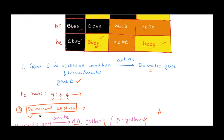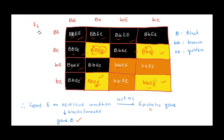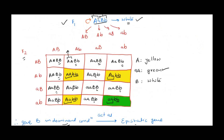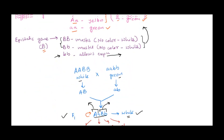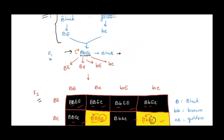To summarize: in recessive epistasis, the epistatic gene has to be in homozygous recessive condition — then no matter what genotype the hypostatic gene has, it will be masked. In dominant epistasis, the epistatic gene should be in dominant condition, either heterozygous or homozygous dominant — in that case it will mask the effect of the hypostatic gene.